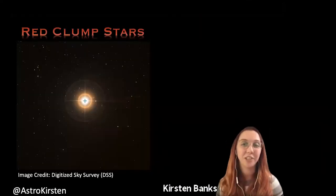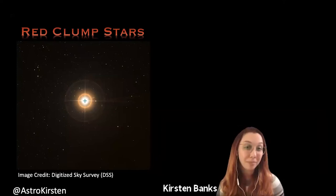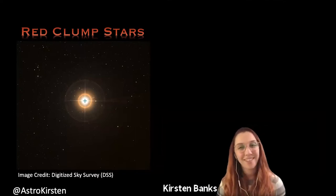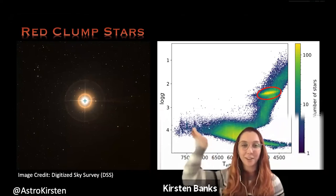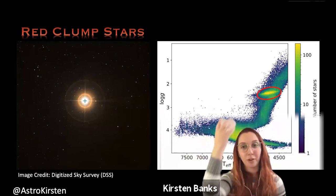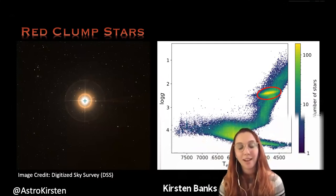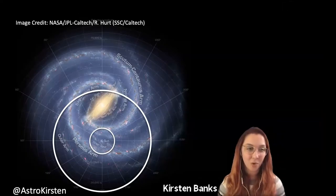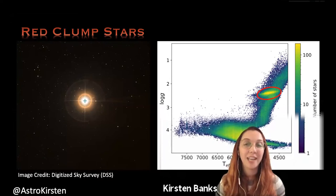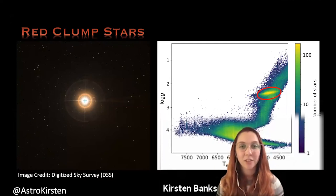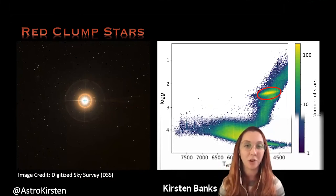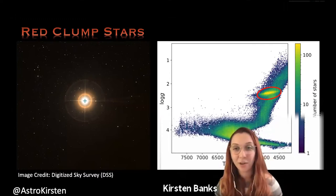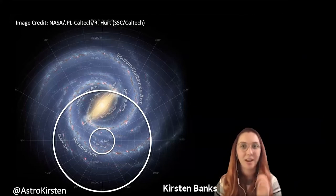One particular standard candle we like to use in galactic archaeology is a kind of evolved star called a red clump star. When we plot stars on a graph of surface gravity versus temperature, they group in a literal clump in the red part of the temperature axis — hence the name. Red clump stars have used up all of their hydrogen in their cores and are now fusing helium instead. They are effective standard candles because they all have extremely similar luminosities, and we can determine their positions up to about 35,000 light years away — covering much more of the galaxy.